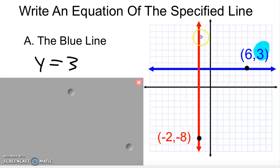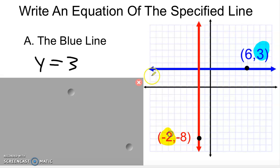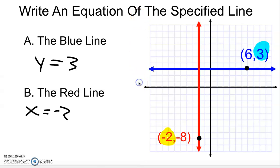The red line is going up and down. The y is always changing, but what's not changing is the x. In this case, the x is always going to be locked at negative 2. So the equation of the red line is x equals negative 2.